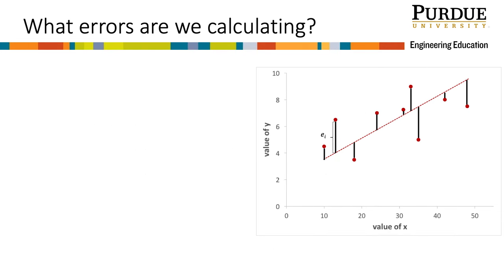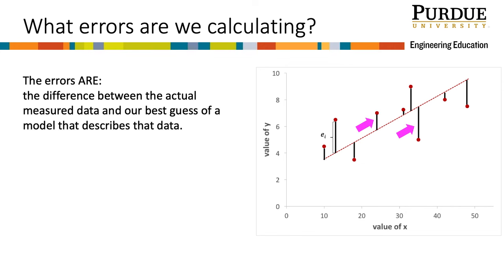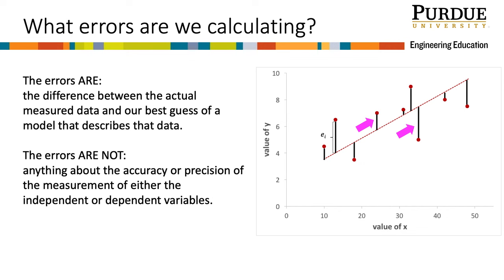Now we know that our goal is to minimize the sum of squared errors in order to do least squares regression. So what errors are we minimizing? The errors are the difference between the actual measured data and our guess that is determined by our model line — that is, how far off our model is from the reality of the data values. These errors are not anything about the accuracy or precision of the measurement of either the independent or dependent variables, and they do not have anything to do with how well the data were collected. They are not noise in the data.